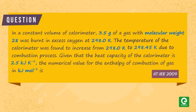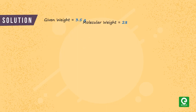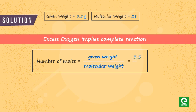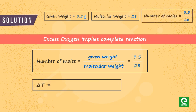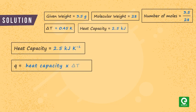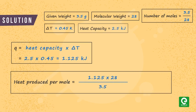Solution: We are given 3.5 grams of a gas with molecular weight 28. Number of moles equals 3.5 divided by 28. The change in temperature equals 298.45 minus 298.0, which is 0.45 Kelvin. The heat capacity of the calorimeter is 2.5 kilojoules per Kelvin. Since Q equals heat capacity multiplied by change in temperature, the heat produced per mole equals 1.125 multiplied by 28 divided by 3.5, which comes out to be 9 kilojoules per mole.